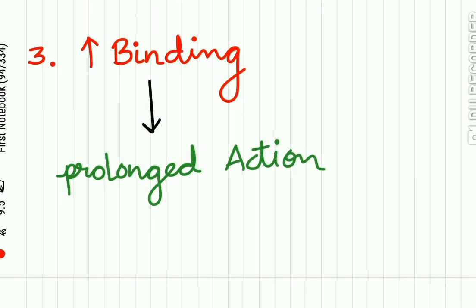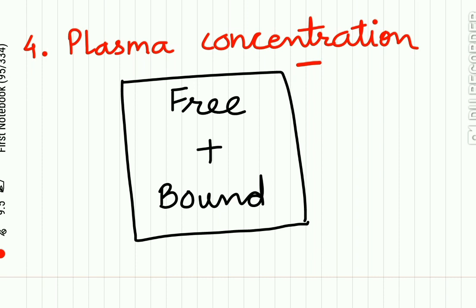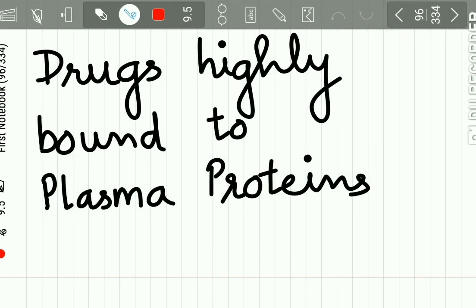More plasma protein binding results in a prolonged duration of action of the drug. The plasma concentration is made up of the concentration of both the free drug and the bound drug in the body. The degree of protein binding should be taken into account when relating plasma concentration to the concentration of drug that is active.